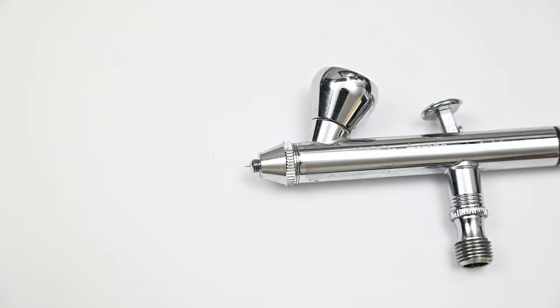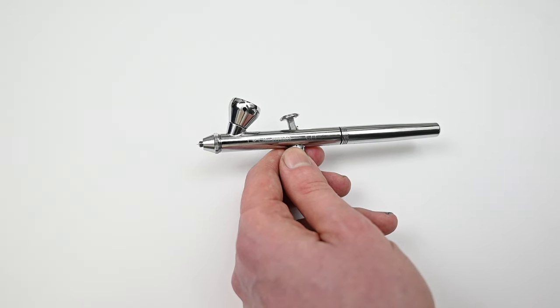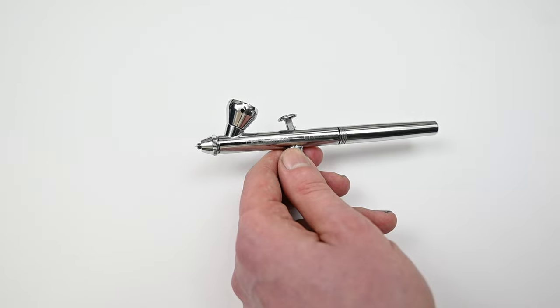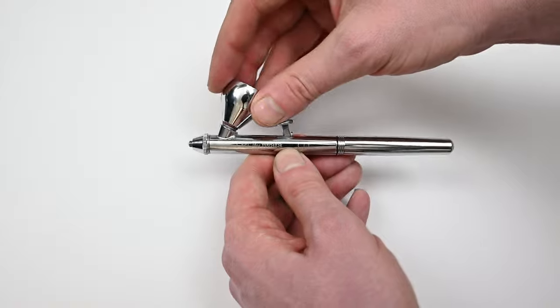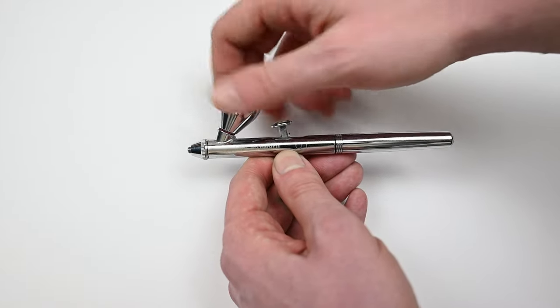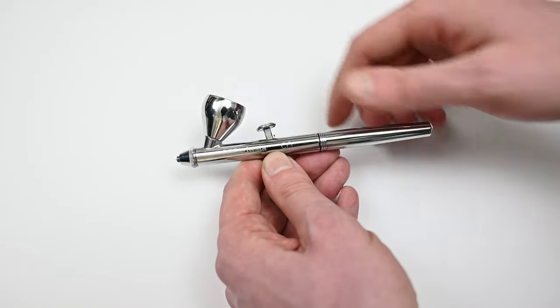Equipped on it right now is a smaller paint cup which is three milliliters but this also can be swapped out for the larger one which is seven milliliters. Both of these paint cups come with the airbrush so you don't have to buy them separately and they both have a small gasket at the bottom to prevent any paint from leaking out.